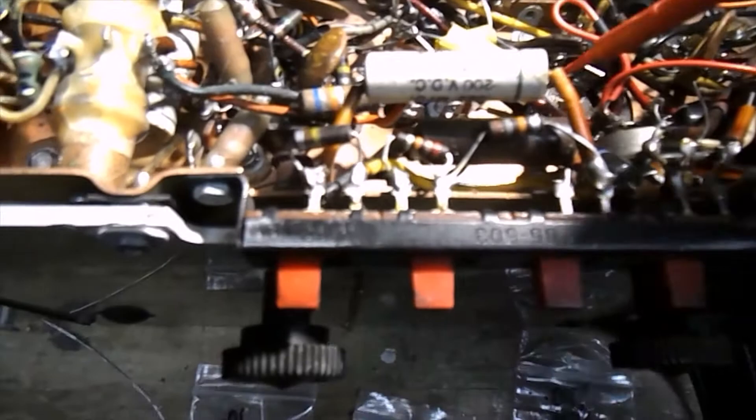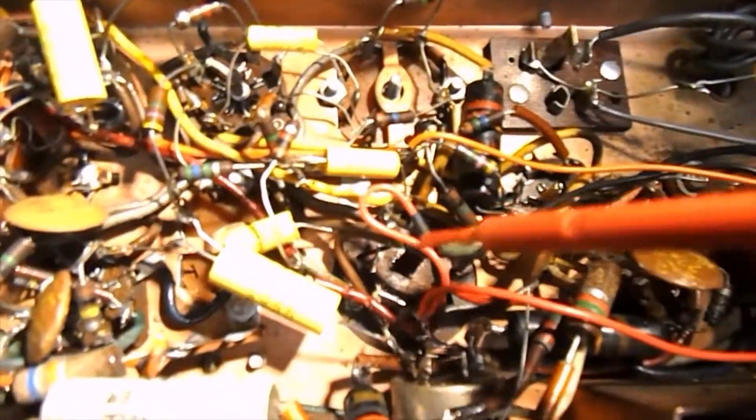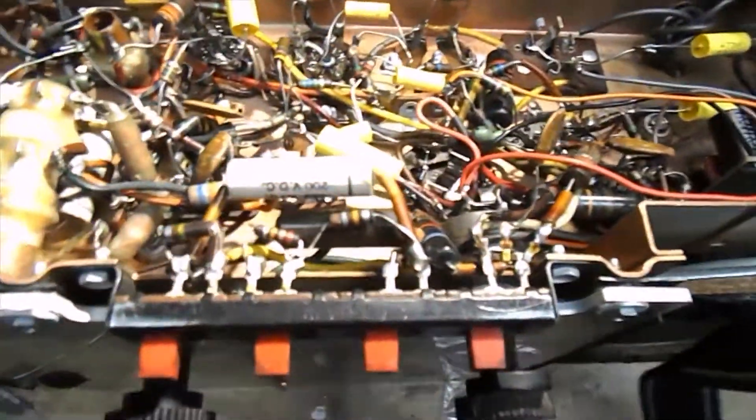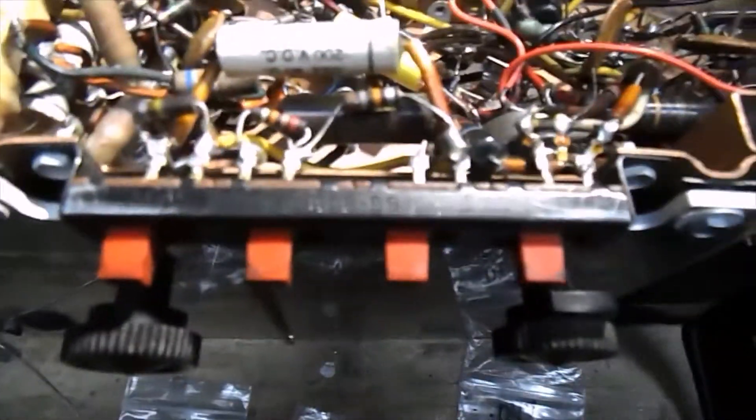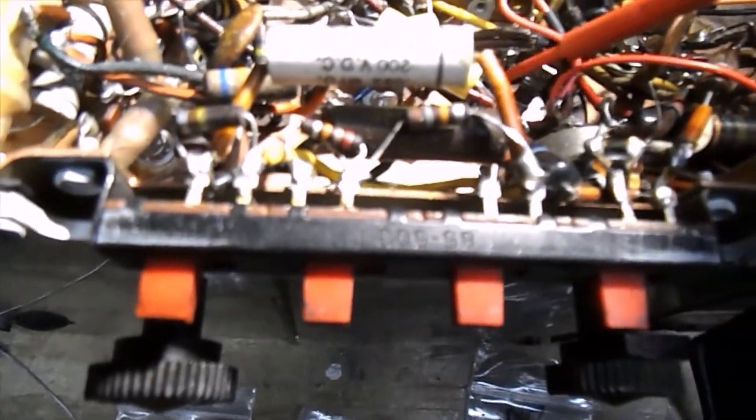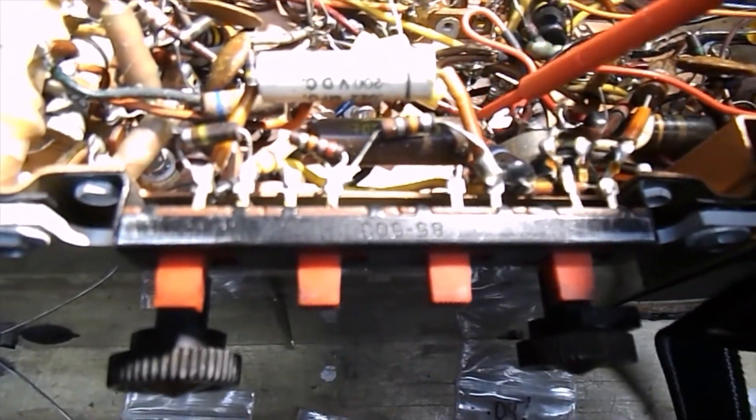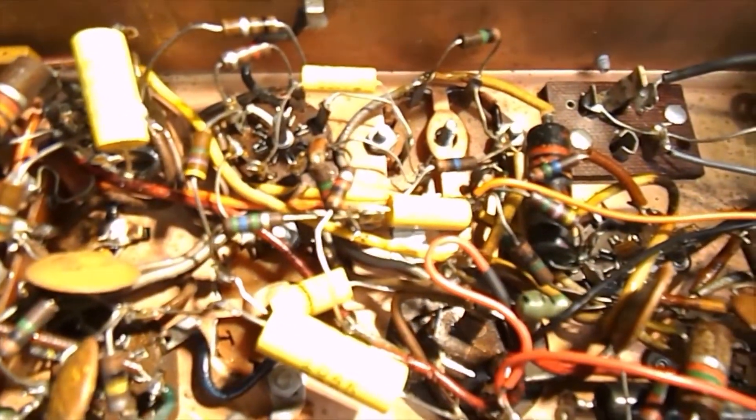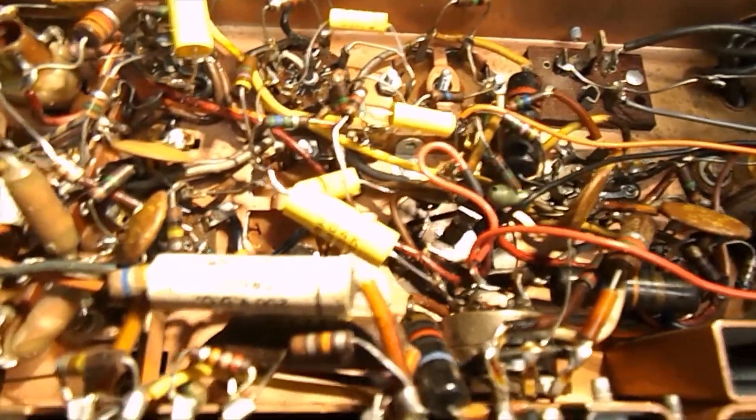One thing I didn't mention earlier was on the can capacitor, the can capacitor has been changed before. I can tell because there's writing on it. There's print on it. It's modern print. So somebody changed it. And what they did was they snipped the tab off the old one and they just soldered it to the new tab. And that made things a little challenging trying to get it apart and solder the wires the way it needed to be, but it worked out.